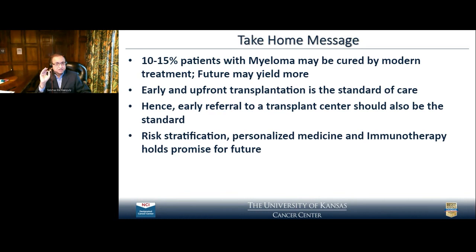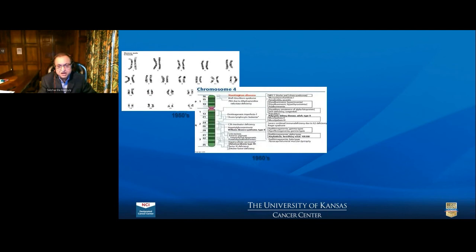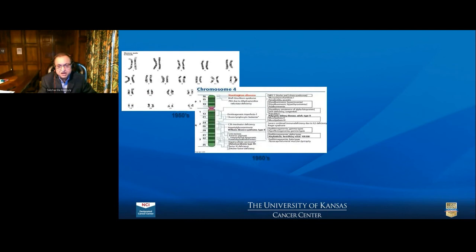Take-home message: 15 to 20 percent of patients may be cured by modern treatment. I still think early and upfront transplantation is the standard of care for transplant-eligible patients, and hence early referral to a transplant center should also be the standard. Risk stratification and personalized medicine — not every drug is for everybody. We need to think about the patient holistically: not only treating the cancer but also considering their life, their socioeconomic status, their grandchildren's birthday party. The goal is: can we cure this disease?